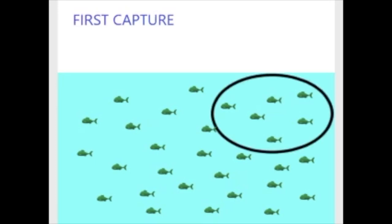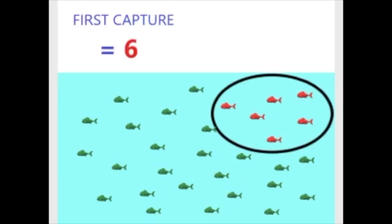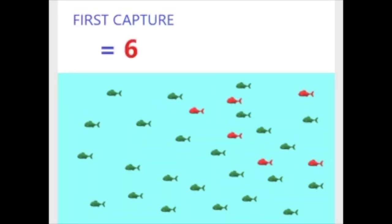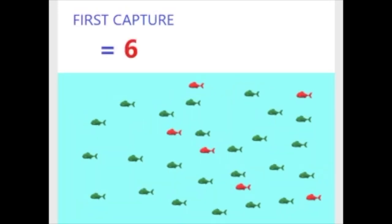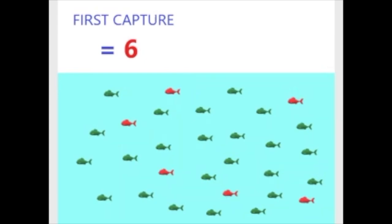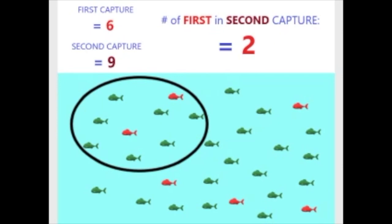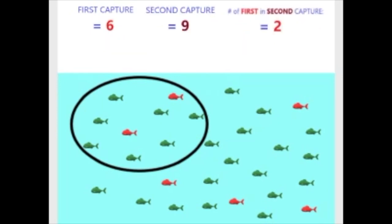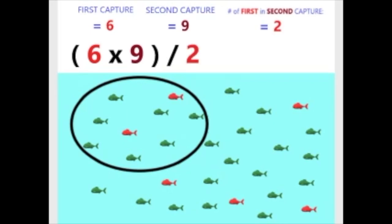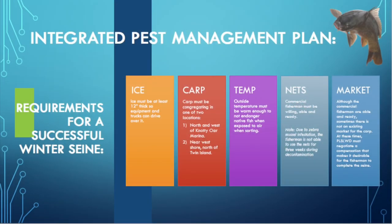Say you catch six carp in the first capture. You mark all six, then release them. Then you capture nine carp in the second capture, two of which you already marked from the first capture. You take the first catch times the second catch and divide that number by the marked carp you caught in the second capture, and that gives you your population estimate of 26 carp.